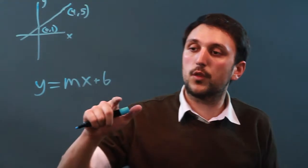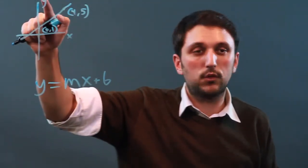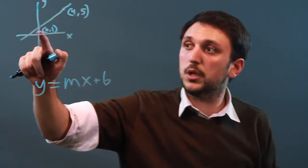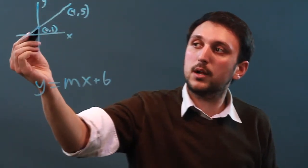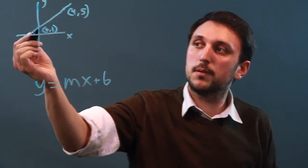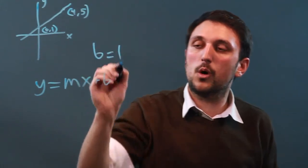So first, let's look for the y-intercept. That's the point at which the line crosses the y-axis. Here we have 0, 1. The y-coordinate when it crosses the y-axis is 1, so we know that b equals 1.